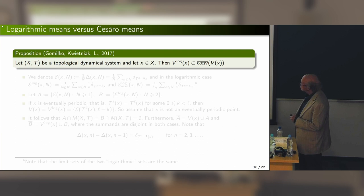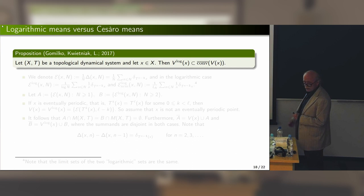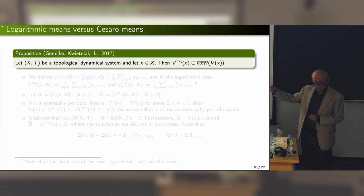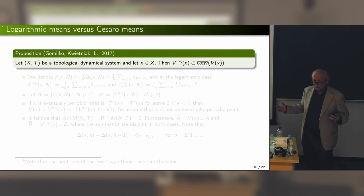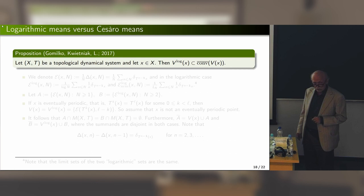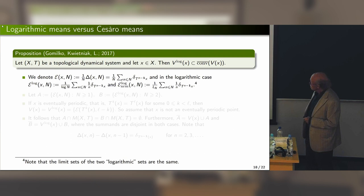This comes from a joint paper with Sasha Gomilko from Kyiv and Dominik Kwietniak. We have a topological system, and the relation between Cesaro visible measures and logarithmically visible measures: if you take the closed convex envelope of the Cesaro visible measures, you capture all logarithmically visible measures. The proof is based on summation by parts: the logarithmic averages can be written as a convex combination of Cesaro averages.